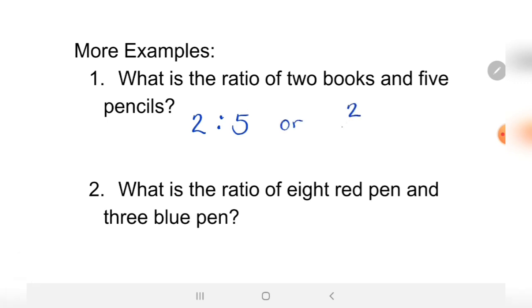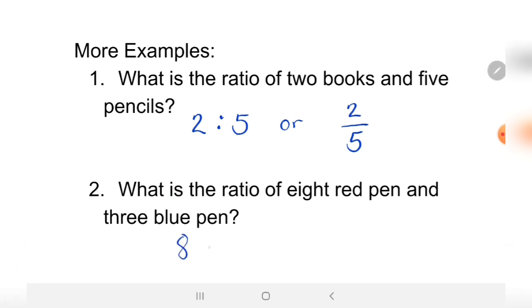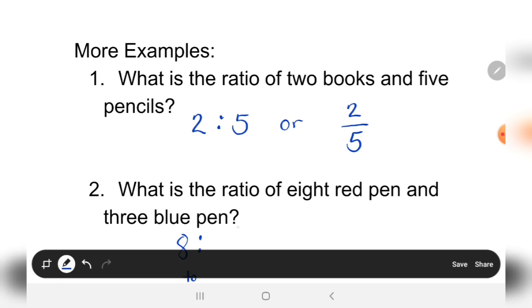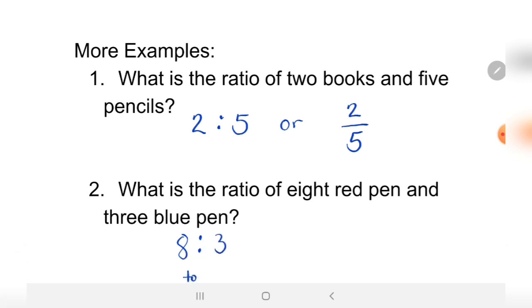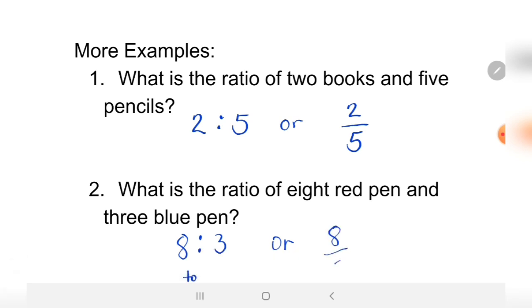Number two: what is the ratio of eight red pens and three blue pens? So the answer is eight to - how to read this colon? 'To'. Eight to three, or eight over three.